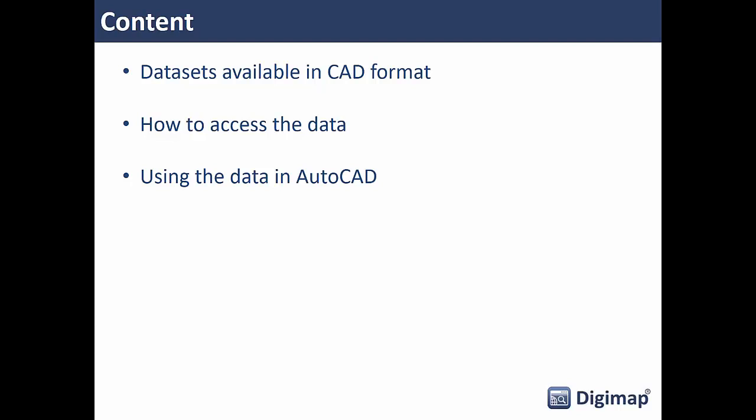Just a high-level view of what we're going to cover today — three separate areas: the datasets available in Digimap in CAD format, how to get hold of that data looking at data download, and finally how to use some of that data in the AutoCAD suite of products.